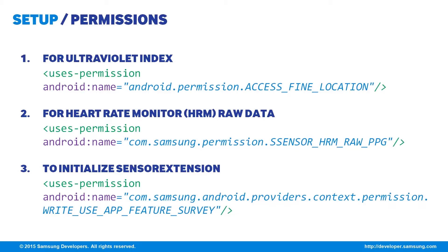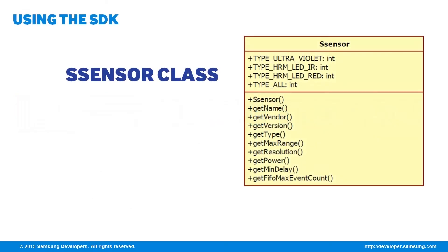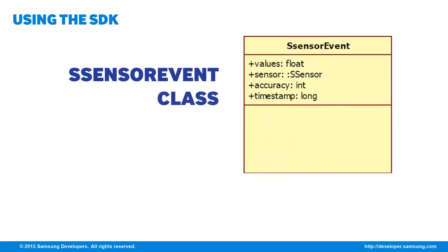Once you've imported the needed libraries and added the needed permissions, it's time to see how some of the classes are used. First off is the Sensor class, which defines the attributes for each sensor which you can get, like name, vendor, version, type, and other values. Next is the SensorEvent class, which is mainly a placeholder for the values the sensor will collect, such as the values, sensor type, accuracy, and timestamp.